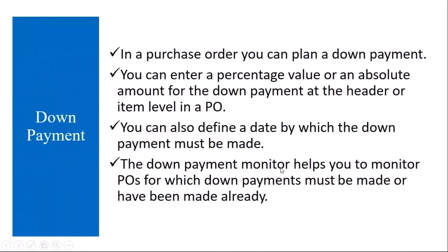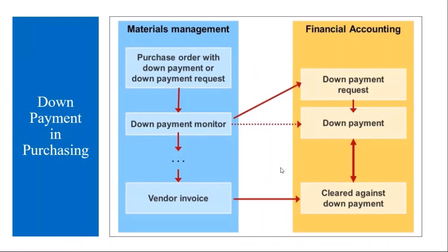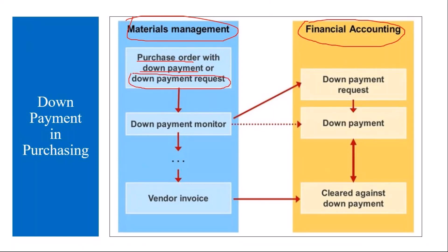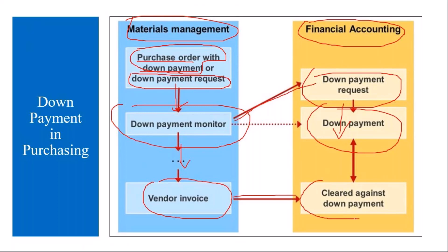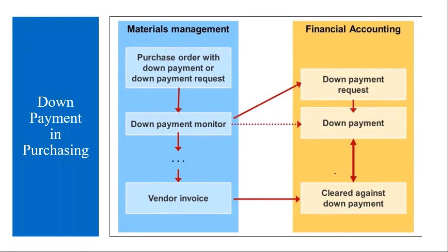What we are discussing today is basically the integration between Materials Management (MM) and Financial Accounting (FI). You create the purchase order with down payment — or sometimes finance can directly create a down payment request. This is tracked through the down payment monitor. Finance people make a down payment request, then post the down payment. After material is received and invoice verification is done, the down payment value is cleared along with the invoice amount. During invoicing, the system displays that a down payment already exists.